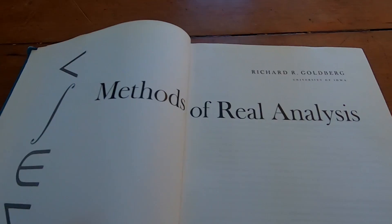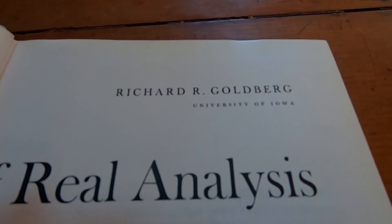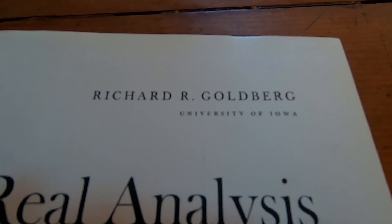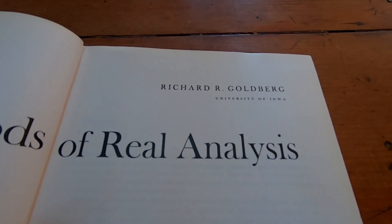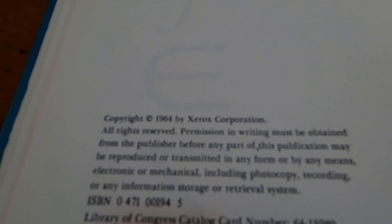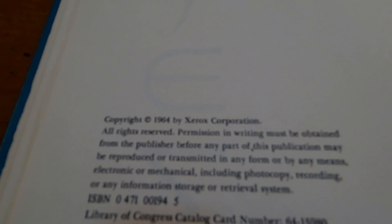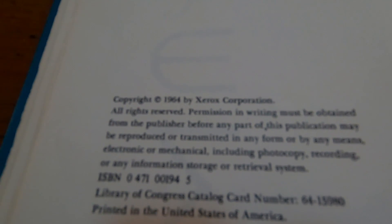Here's the inside of the book, Methods of Real Analysis, and there's the author Richard R. Goldberg, University of Iowa. Good stuff. You see there's the date of the book, 1964. That was a long time ago. So this is a 60s book on real analysis.